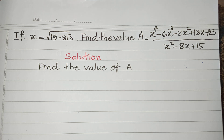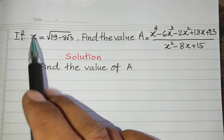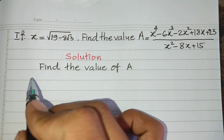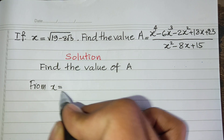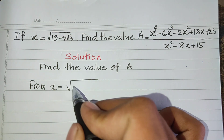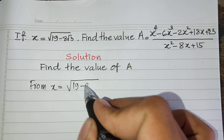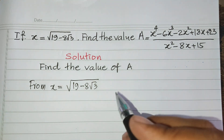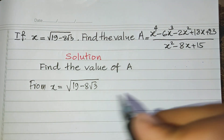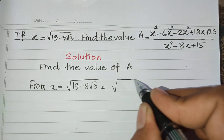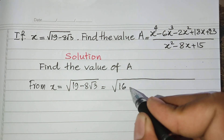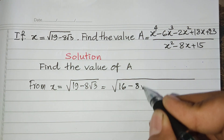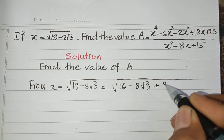Okay, now we go to the solution together. From h equals square root of 19 minus h square root 3, I can rewrite it — I write 16 minus h square root 3 plus 3. You see this? 16 plus 3 equals 19.